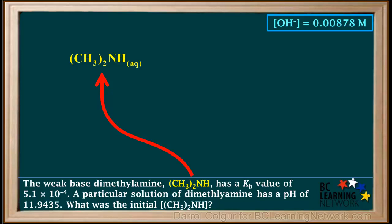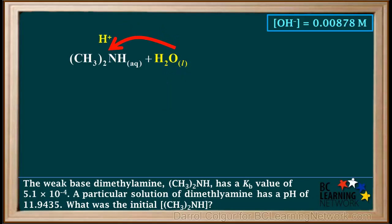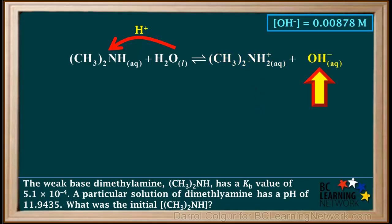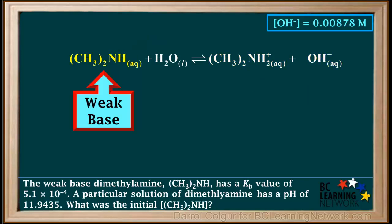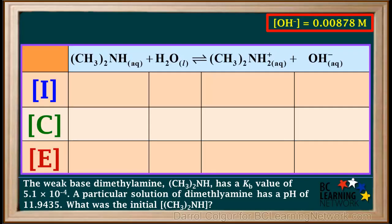We start by writing (CH₃)₂NH aqueous. In its ionization equation, it's added to water. The base (CH₃)₂NH will accept a proton from water and produce the conjugate acid (CH₃)₂NH₂⁺ and a hydroxide ion. Because (CH₃)₂NH is a weak base, we add an ICE table under this equation like this. As always, we'll leave out water because it's a liquid.